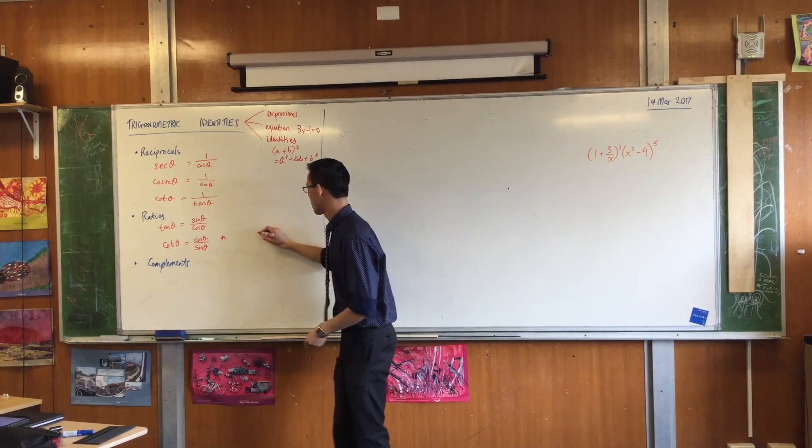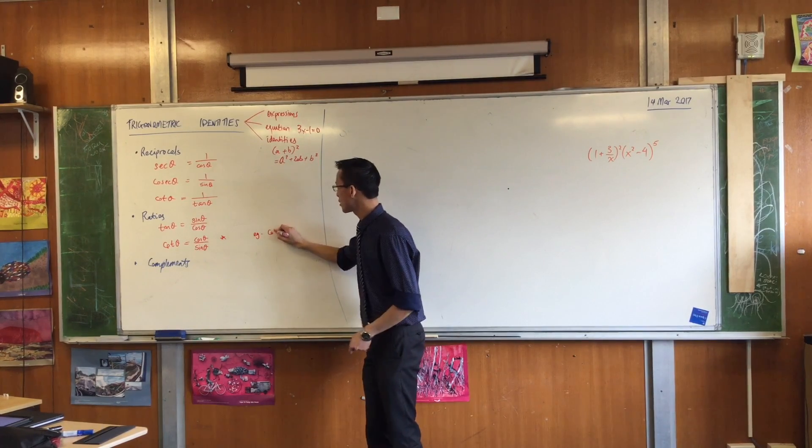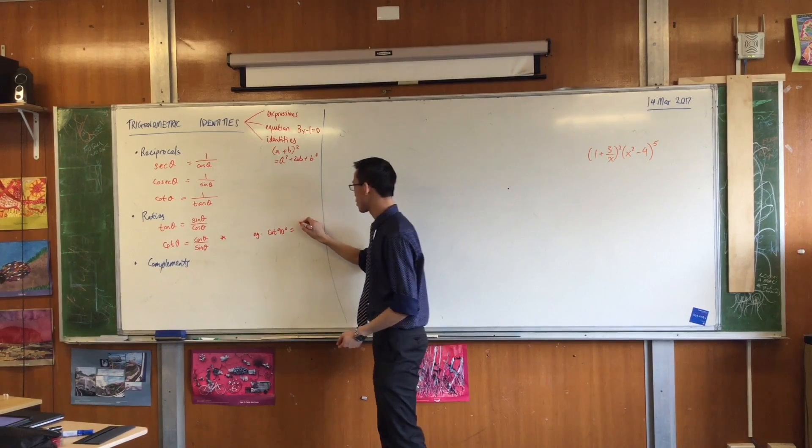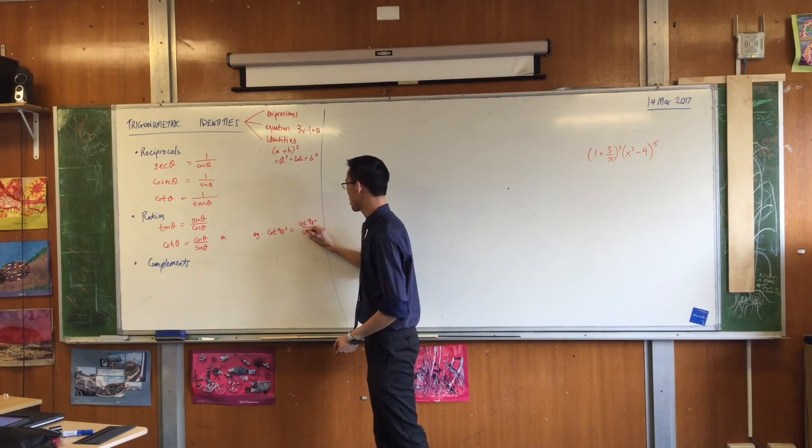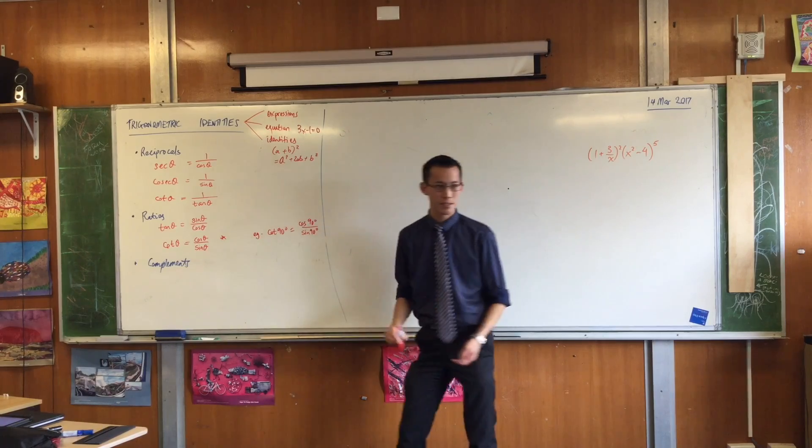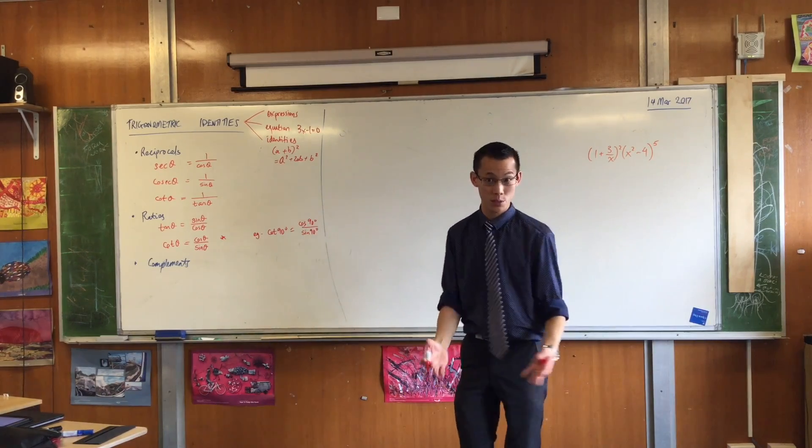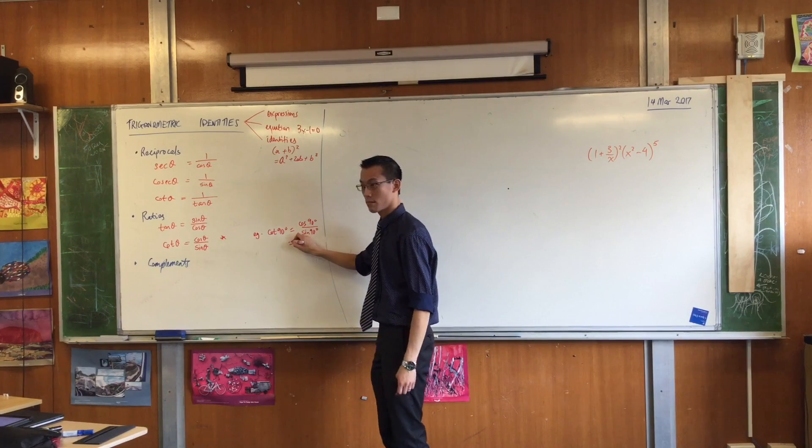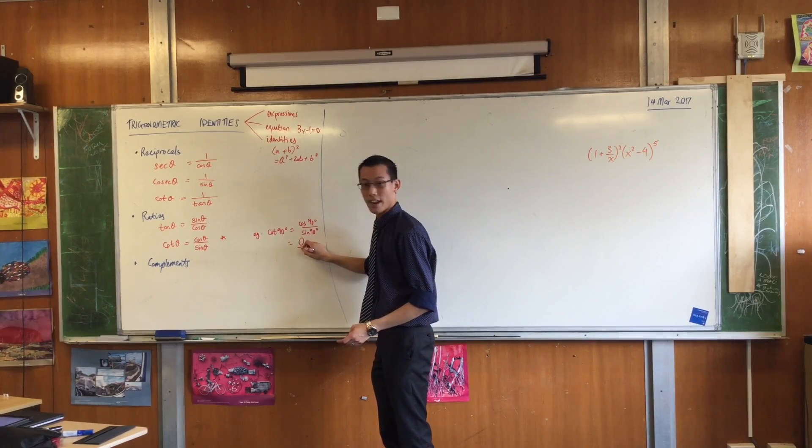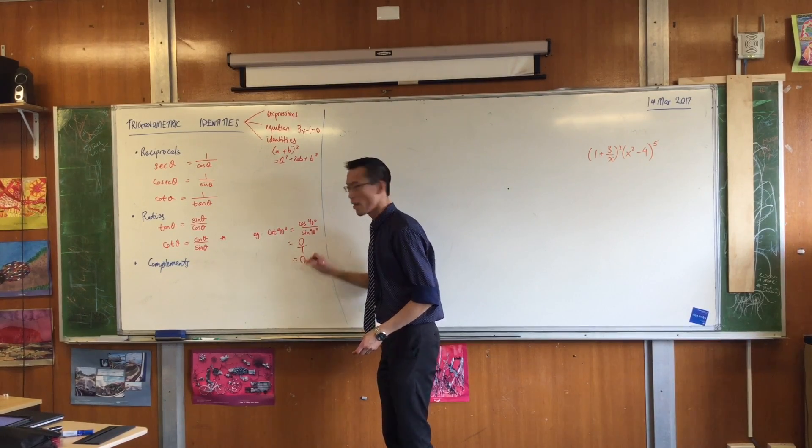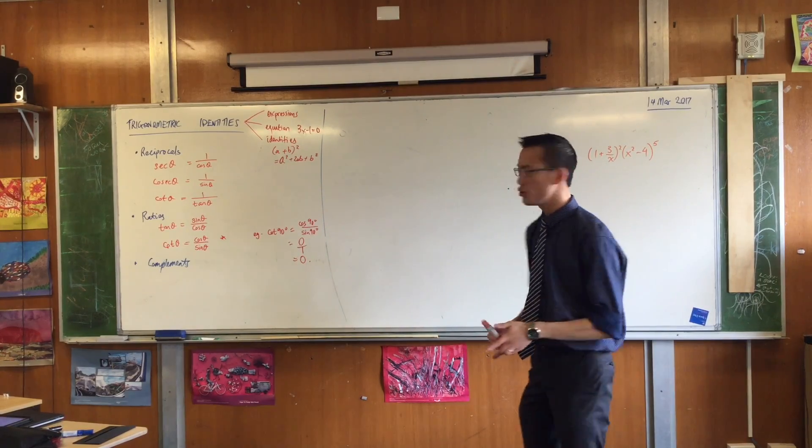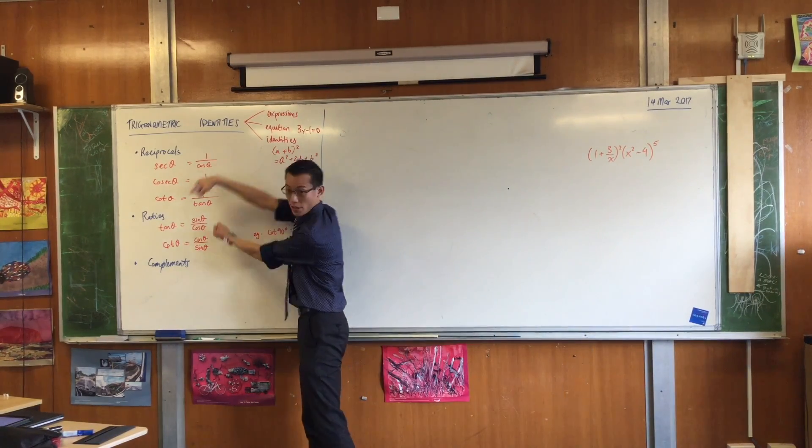For example, cot of 90 degrees. What is that? Well, it's cos of 90 degrees on sine of 90 degrees. Now, whereas tan just blew up as soon as you tried 90 degrees, this doesn't blow up at all. What's cos 90? Zero. It's zero. And sine 90 is 1. So that's fine. And we graphed that. We saw it. It works. So you need these. They sort of help each other out.